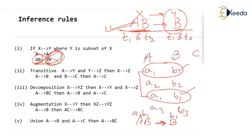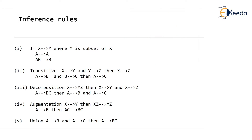The second inference rule is the transitive rule. This is very easy: if X determines Y and Y determines Z, then X determines Z. For example, if A determines B and B determines C, then A should determine C. This is a transitive relation.